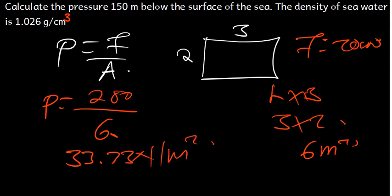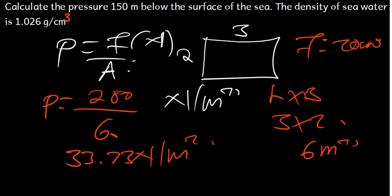By the way, the SI unit for pressure is newton per meter squared. Using dimensional analysis, we can see that the force is in newtons and the area is in meters squared, so therefore the SI unit for pressure is newton per square meter.